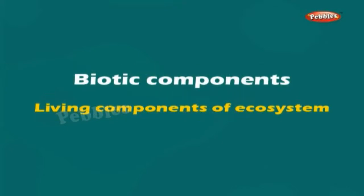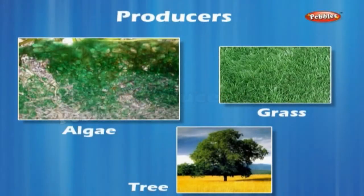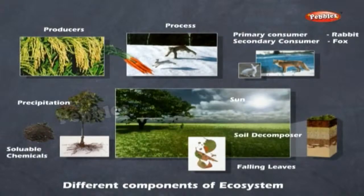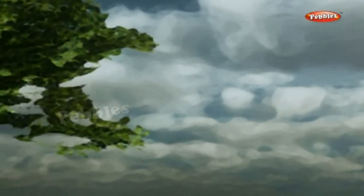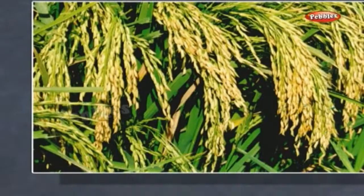Biotic Components: They include the living components of an ecosystem. Producers include green plants like algae, grasses and trees which can prepare their own food by the process of photosynthesis. They contain chlorophyll and convert solar energy into chemical energy of food. They are the source of food for other organisms and are also called autotrophs.